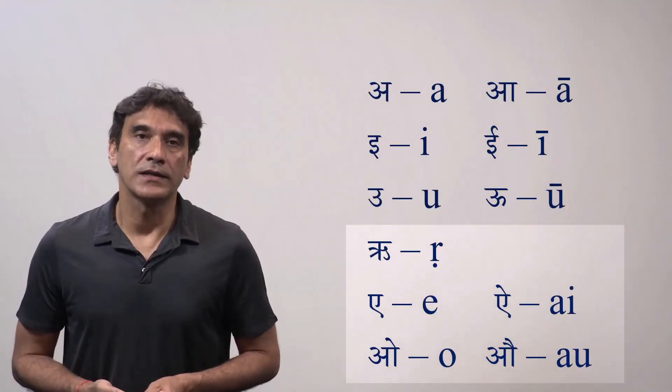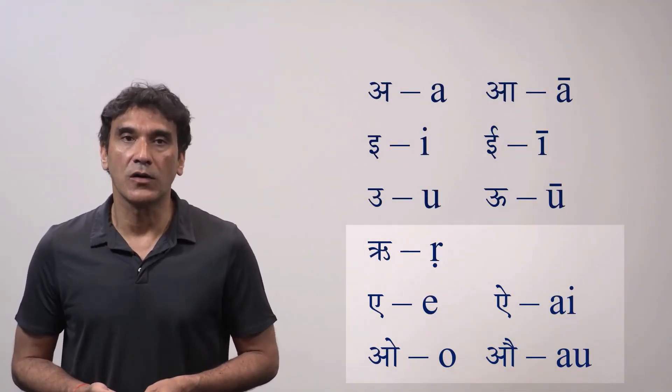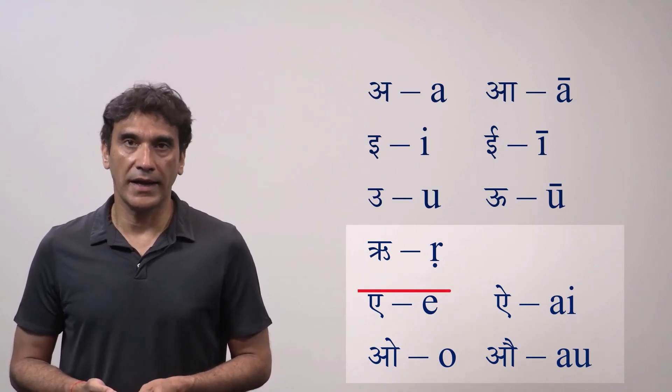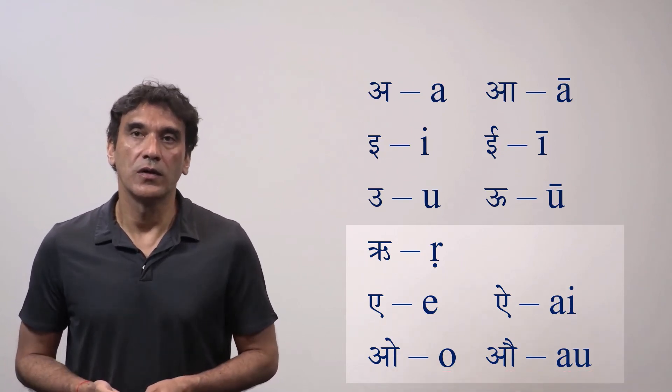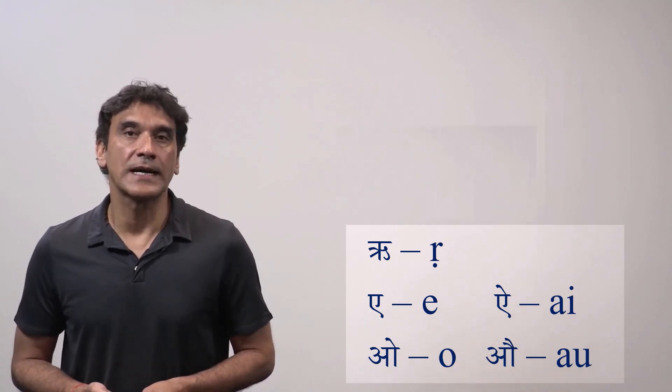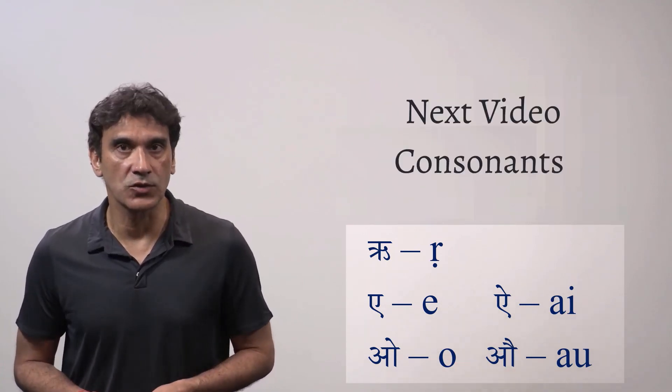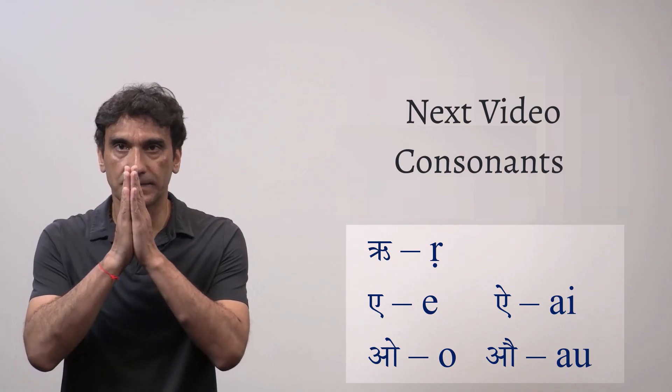In this video we learned how to write and pronounce the vowels ri, e, ai, o and au. From the next video onwards we will start taking the consonants. See you there. Namaskar.